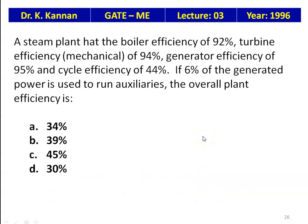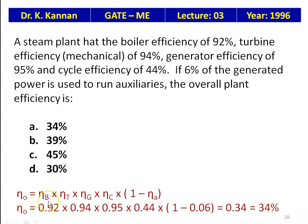A steam plant has boiler efficiency 92%, mechanical efficiency 94%, generator efficiency 95%, and cycle efficiency 44%. If 6% of generator power is used to run auxiliaries, the overall plant efficiency = 0.92 × 0.94 × 0.95 × 0.44 × (1 − 0.06) = 0.34 = 34%. The answer is 34%.